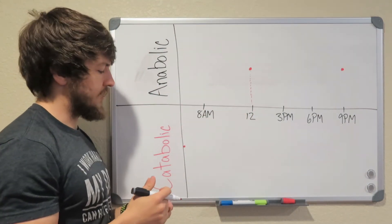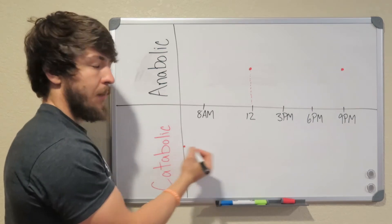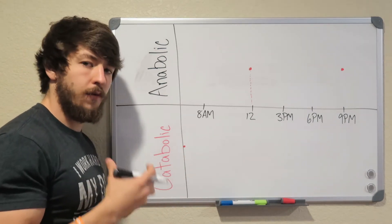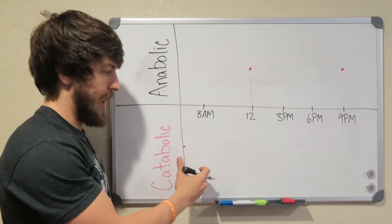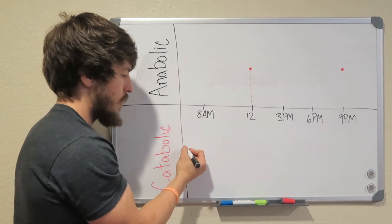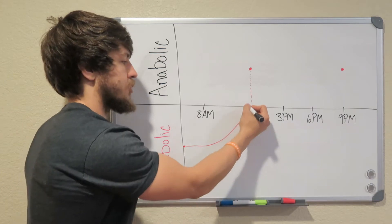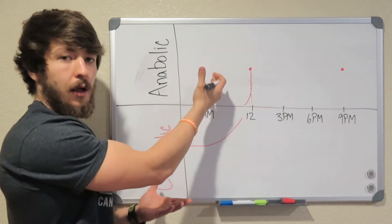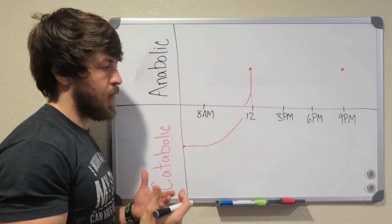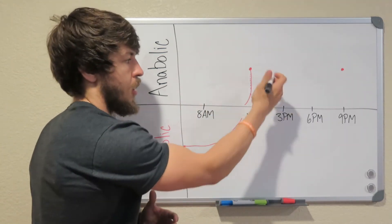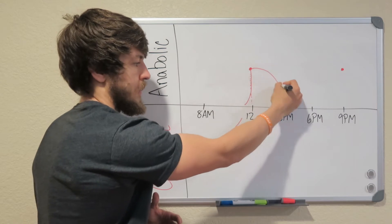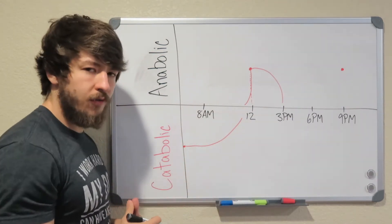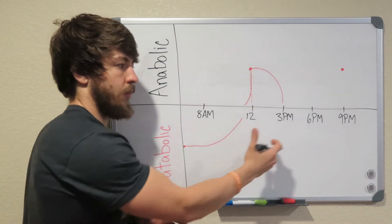Now, to show you guys this example, we are going to be catabolic until we have a meal. And remember, a meal means you have enough protein to switch you from catabolic to anabolic. So we eat, let's say, some grilled chicken for lunch. Boom. Now, all of a sudden, we're anabolic. And this is going to last us for about three hours. So it lasts us for noon all the way till three when we drop down again.